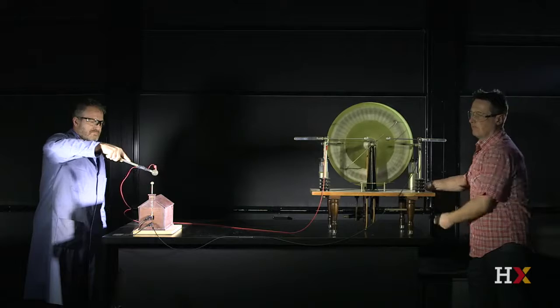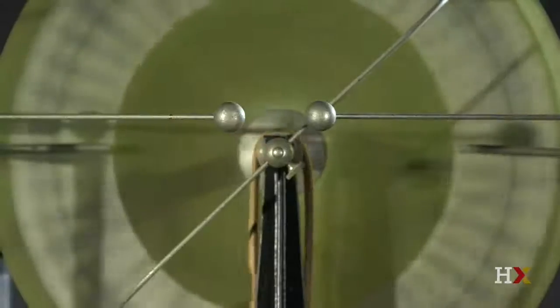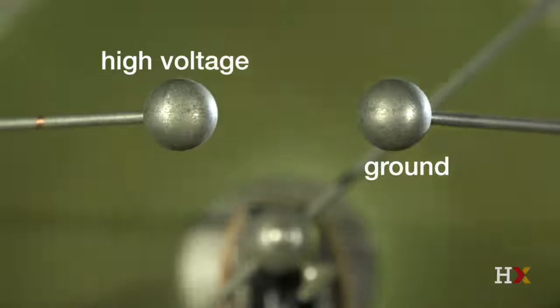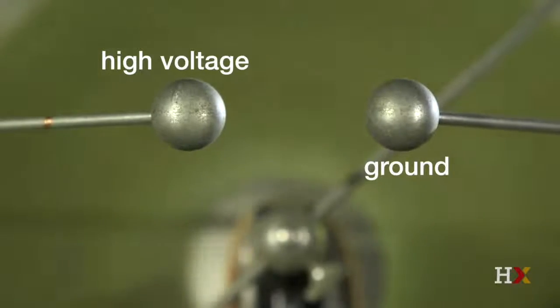As Alan continues to turn the crank, it generates such a high voltage that it ionizes the air, allowing us to see the electric discharge as a long electric spark jumping between the discharging balls. This electric spark is the same in nature as the lightning we see in a thunderstorm.